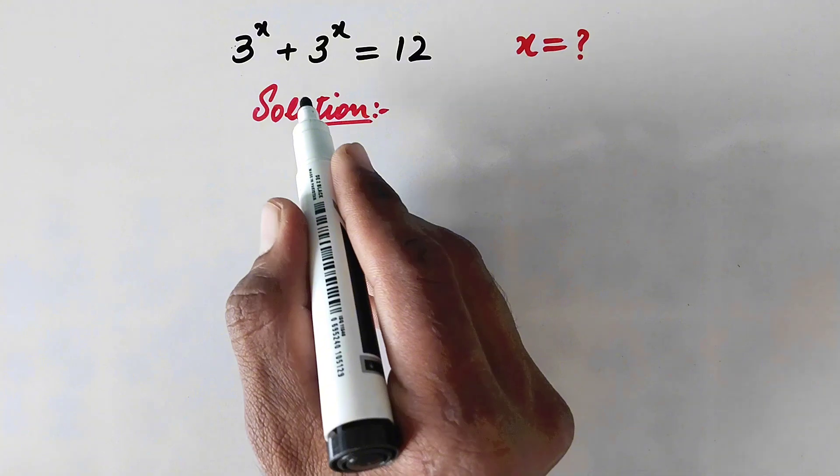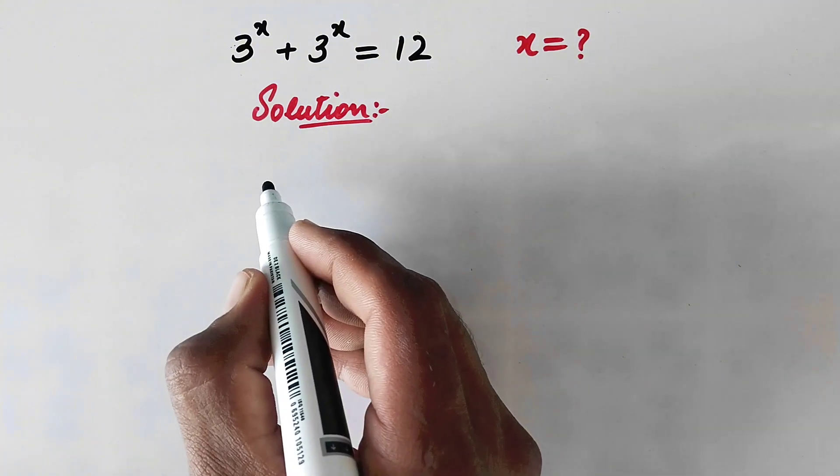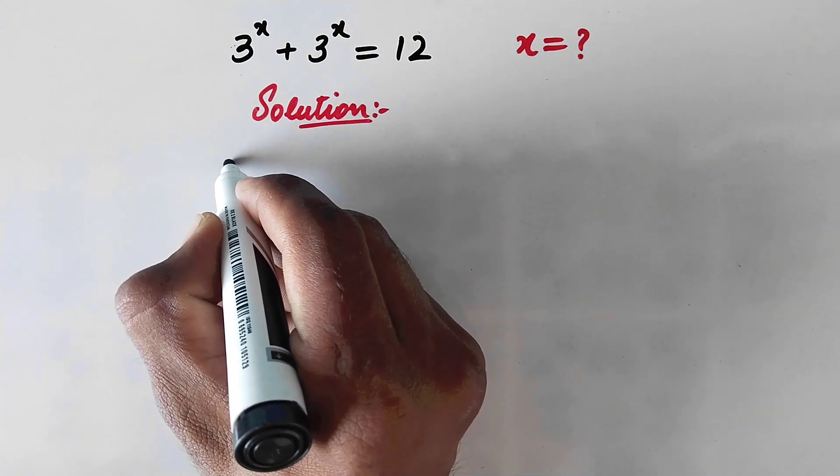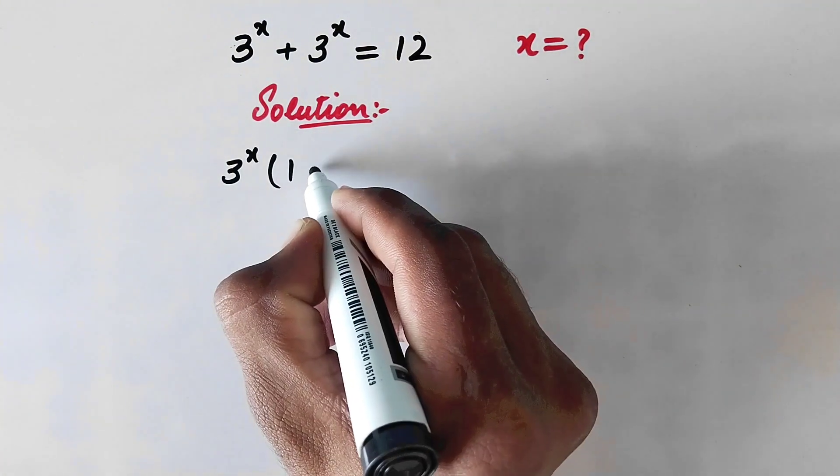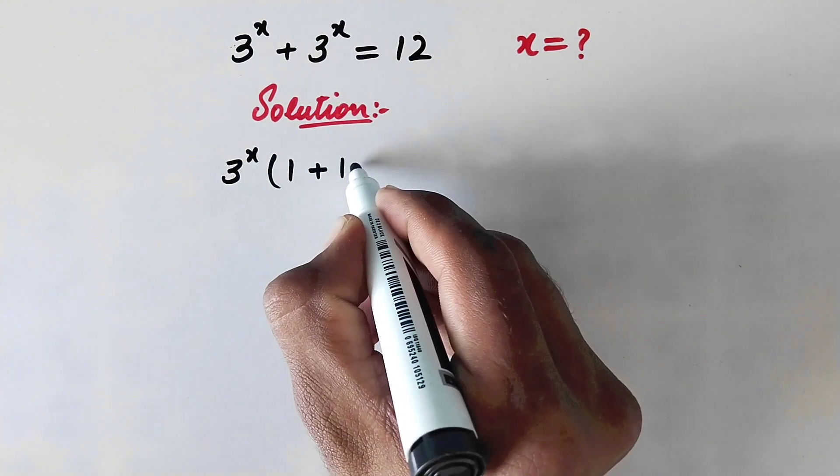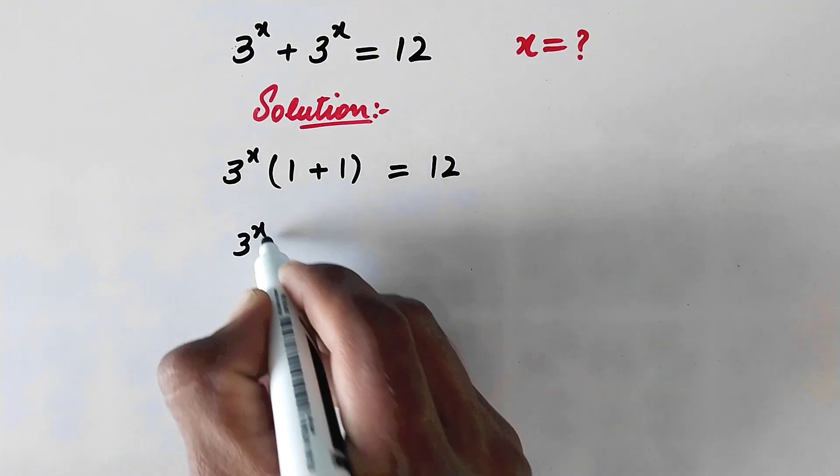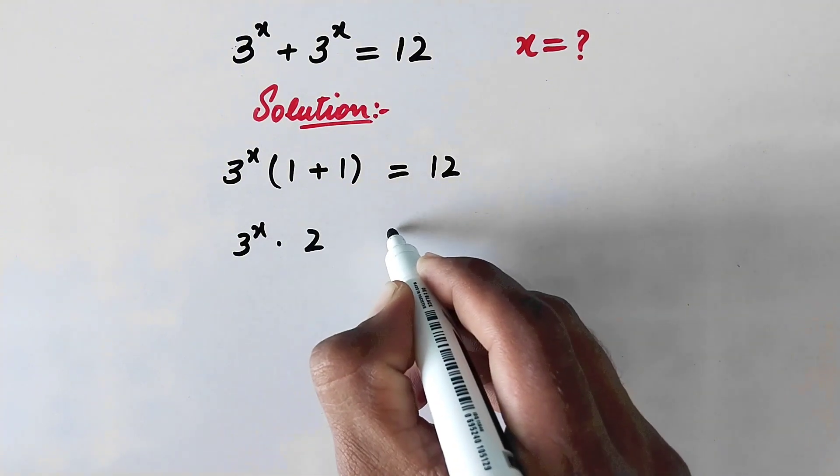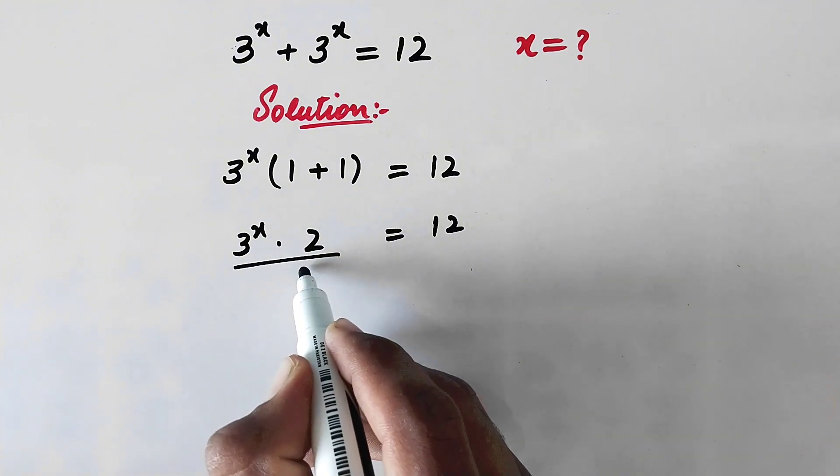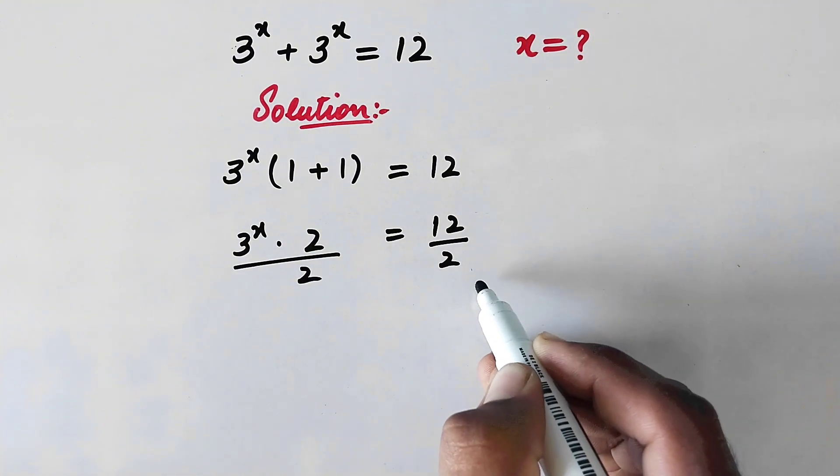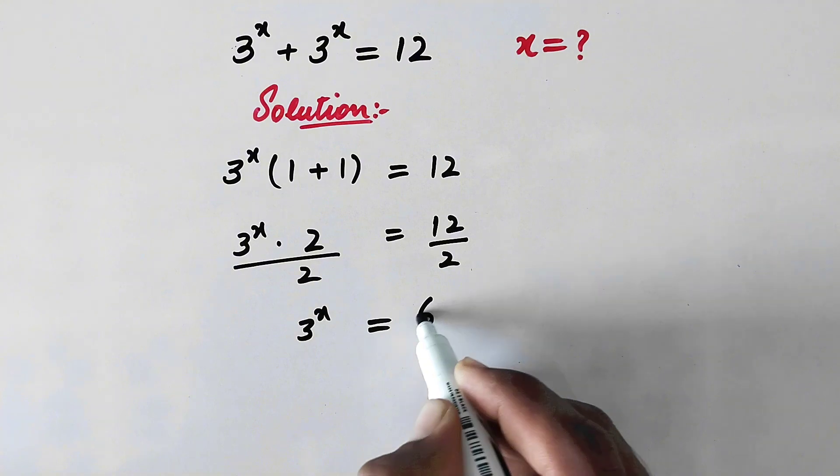So here in first step, as we can see on the left hand side there is the same value 3 to power x repeating. So we will take it as a common factor. Therefore here will be 3 to power x times (1 plus 1) equals 12. Then here will be 3 to power x times 2 equals 12. And now to eliminate this 2 we will divide both sides by 2. So here we will get 3 to power x equals 6.